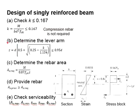You may proceed with determining the lever arm by using this equation. It is to be ensured that the Z is always less than 0.95d. In case that it is more than 0.95d, the Z is taken as 0.95d.